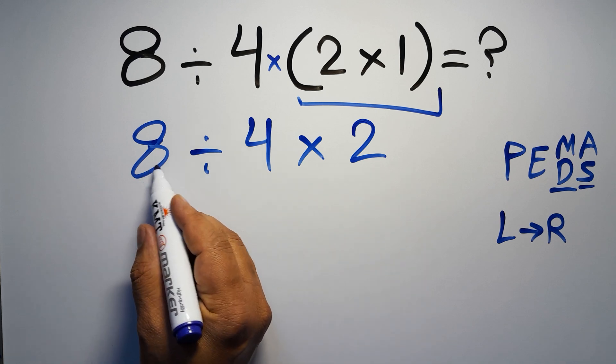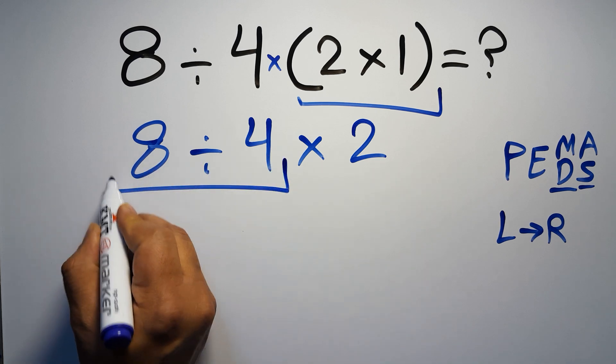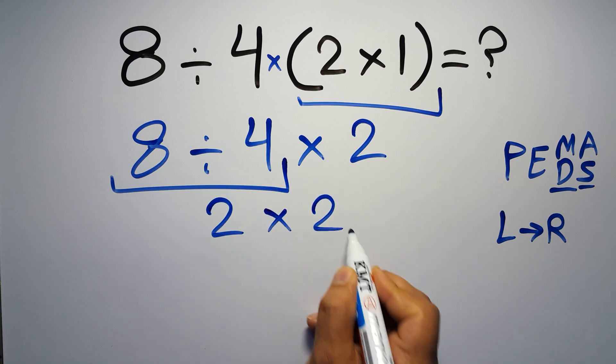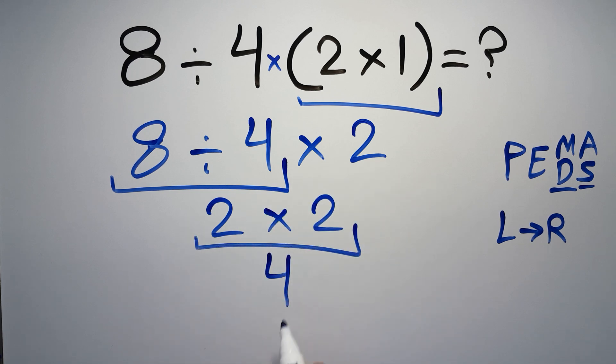So first, 8 divided by 4, which equals 2. So 2 times 2, which equals 4. And this is our final answer to this problem.